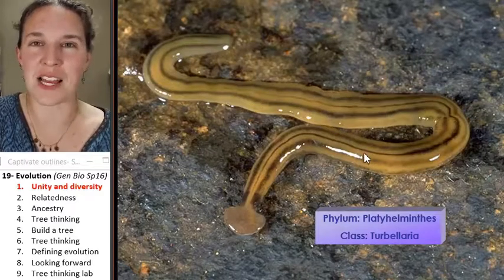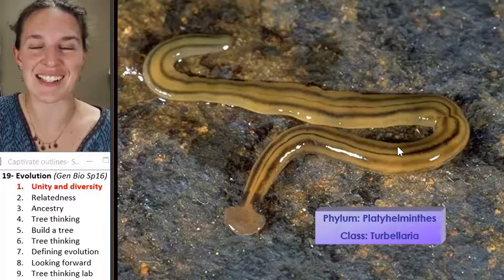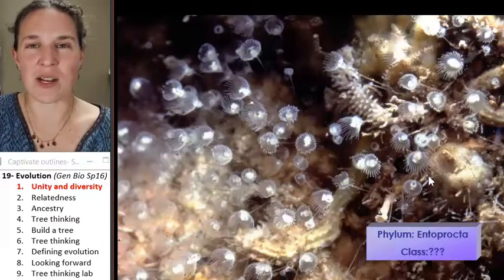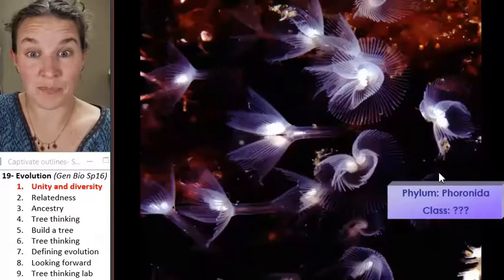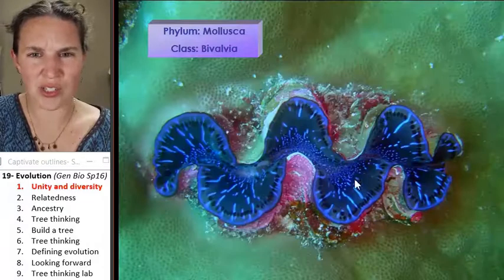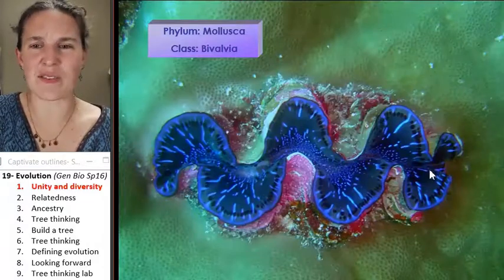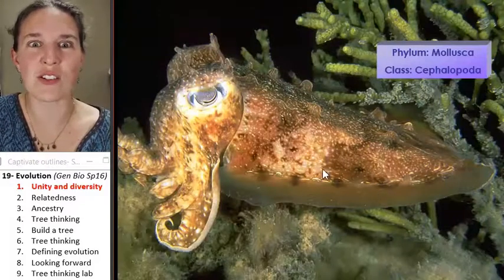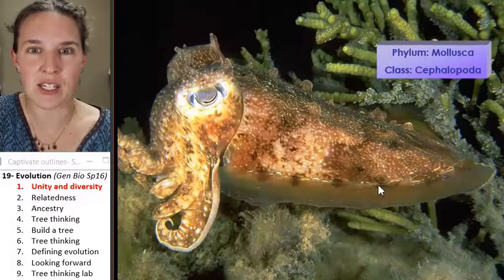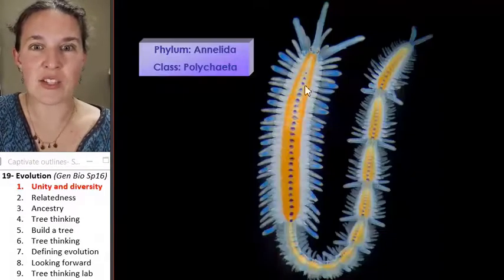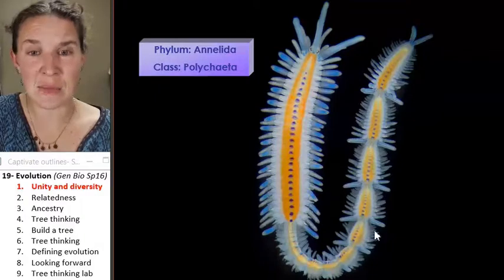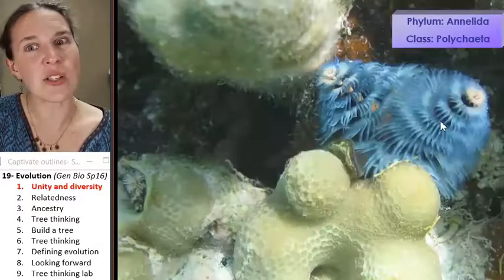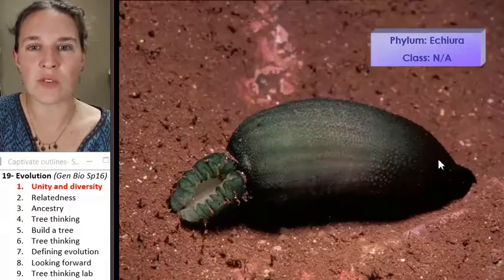A whole bunch of flatworms are actually parasites. What is that thing? It's a critter — it's an animal. More ocean critters. Some sort of clam-like thing — look at that. These are beautiful ocean animals. Don't you want to cuddle this little cuttlefish? And it's related to this little segmented worm from the ocean. Here are some more little segmented worms from the ocean.